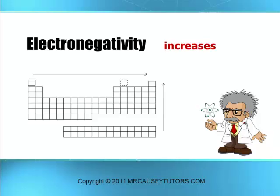Electronegativity is going to be so important because it helps us understand why certain things bond the way they do — whether something is ionic or covalent, the electronegativity values help us make decisions. You don't need to memorize all electronegativities, just understand the trend: as elements go across the table, electronegativity increases; as we go up the table, electronegativity increases. This makes francium one of the lowest electronegativities and fluorine one of the highest. Noble gases are zero electronegativity.